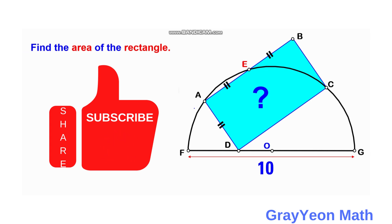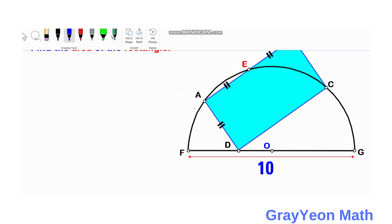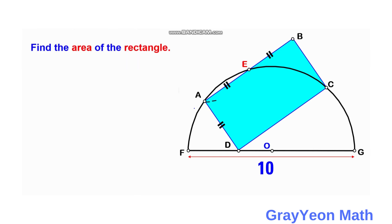The first thing we could do is draw the diagonal of this rectangle from point A to point C.